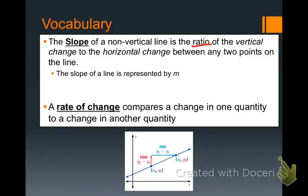We always represent slope with the letter M. If you look at the picture, another way to think about vertical change, the up and down, is the rise. And another way to think about horizontal change is the run.